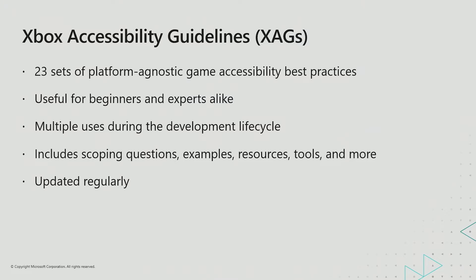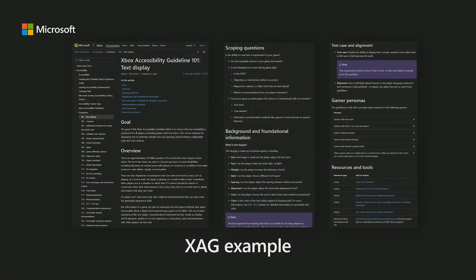As Microsoft grows its knowledge of accessible gaming from interactions with the gaming and disability community and other accessibility-driven game industry partners, we update our best practices with those learnings. In these screenshots, you will see a portion of XAG 101 — text display. The leftmost image also shows the navigation bar, which lists all 23 sets of guidelines. As you can see, there are a variety of information presented, including scoping questions, background and foundational information, applicable gamer personas, and more.